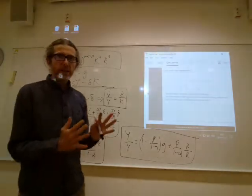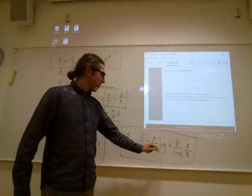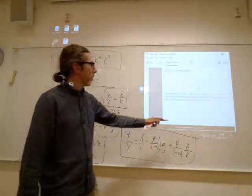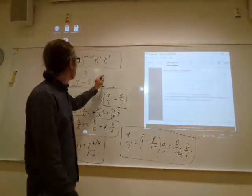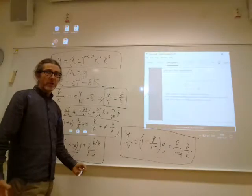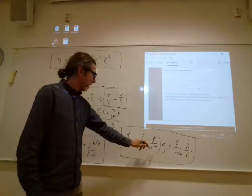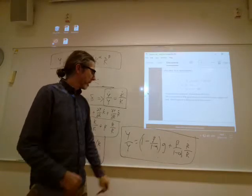So, what did we get in Solow? In Solow, we got that Y dot over Y is G. But in Solow, beta is 0. When beta is 0, we're back. We're Solow, aren't we? So, this fits, because when we set beta to 0, Y dot over Y is G.